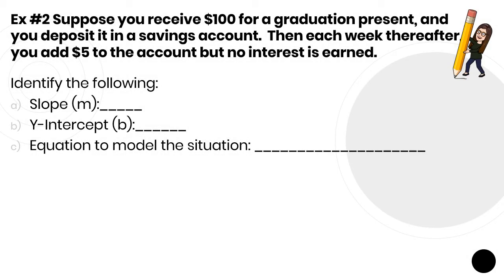Alright, let's take a look at another one. Suppose you receive $100 for a graduation present, and you deposit it into a savings account. Very responsible, right? Then each week thereafter, you add $5 to the account, and we're not going to worry about interest.